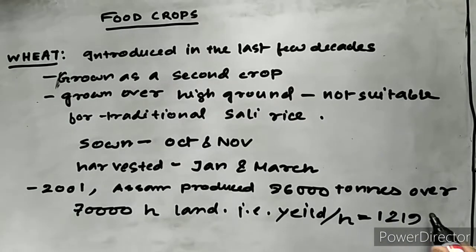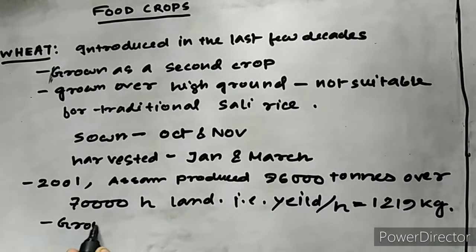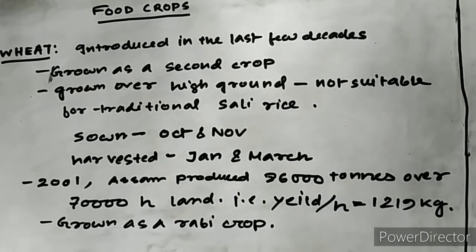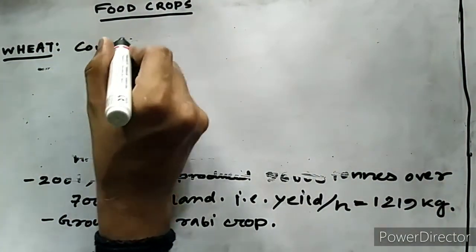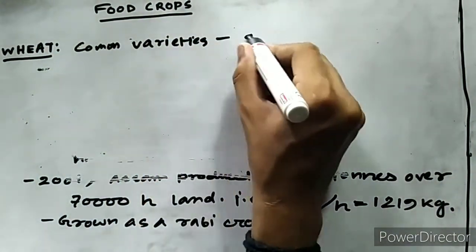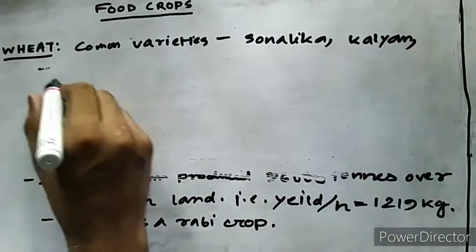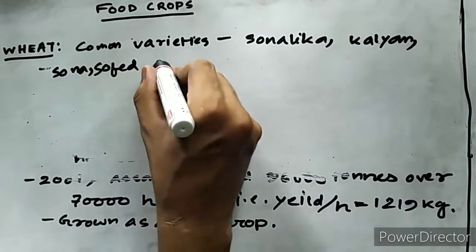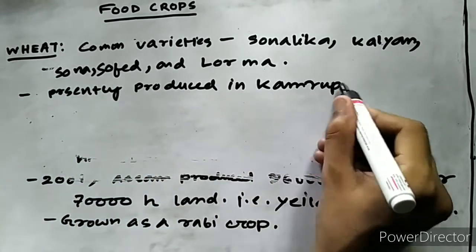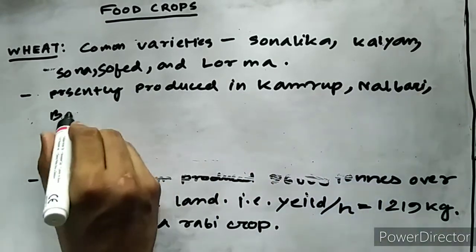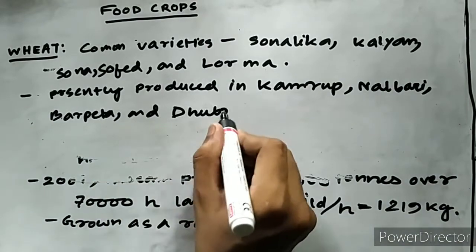As it is grown from October-November to January-March, it is a winter crop, grown as a rabi crop. The varieties commonly grown in Assam are Sonalika, Safed, Koelan Sona, and Lorma.